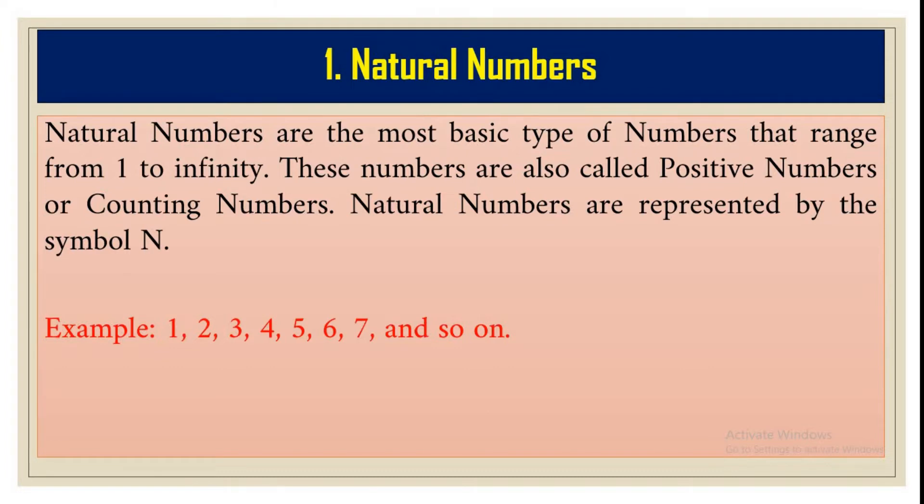This is called a natural number. Natural numbers are the most basic type of numbers that range from one to infinity. These numbers are also called positive numbers or counting numbers. Natural numbers are represented by the symbol N.